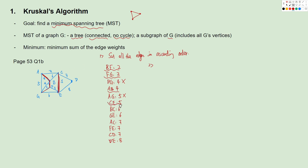The next edge is BC. If we link B and C, there is no cycle, so we link them. Next is GE — if we link GE, we will have a cycle B, F, G, E, C, B, so we reject GE. Then AC: if we link AC, we'll have a cycle A, B, C, A, so we reject. And FE — we have B, F, E, C, B — also a cycle, so we reject.